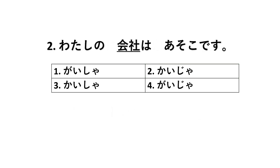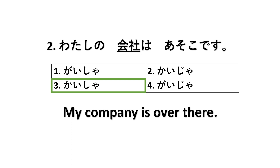Number two: Watashi no wa asoko desu. This is read as the third one, kaisya. Again, the other incorrect choices were created by me — they weren't really in the JLPT N5.